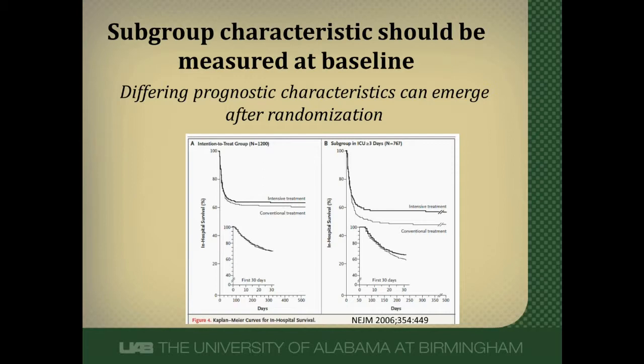Patients who stay in the ICU fewer than three days are going to be very different prognostically from those who stay greater than three days. So it might be that the treatment — in this case intensive insulin therapy — didn't have any real effect on the outcomes, and it was just that the prognostic differences between the patients really drove the finding that intensive insulin therapy in the group who stayed greater than three days had an in-hospital survival benefit. So it may be a spurious association.